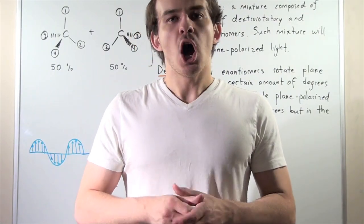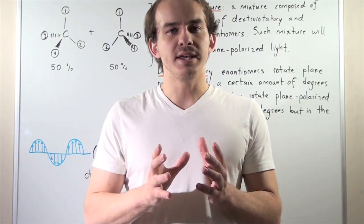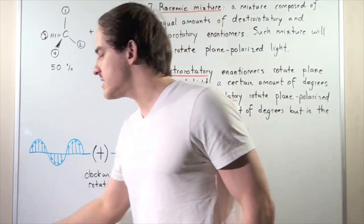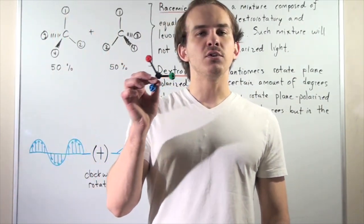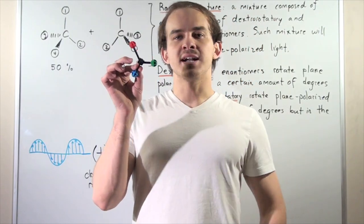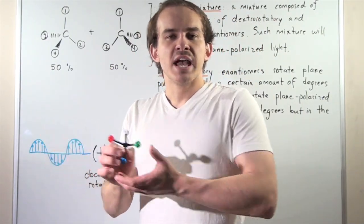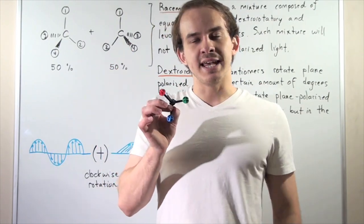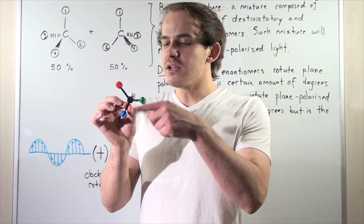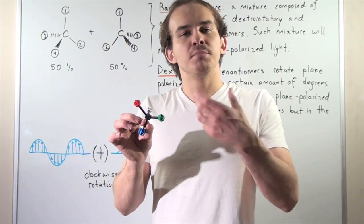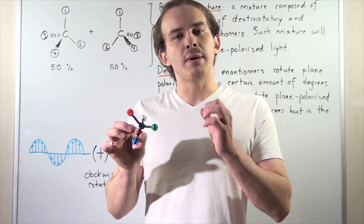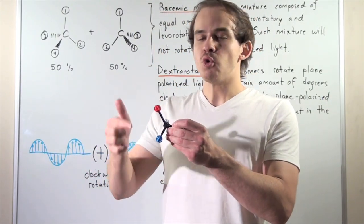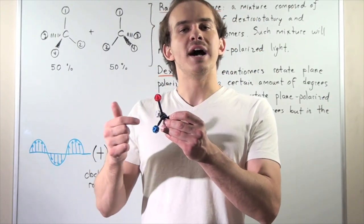Recall that chiral molecules are optically active, meaning they're able to rotate plane polarized light. For example, let's suppose I take a chiral molecule and place it into container A, then shine my plane polarized light onto container A. That means this molecule will rotate the plane polarized light a certain amount of degrees in a certain direction. Let's say this enantiomer rotates it in the clockwise direction.